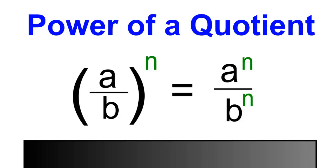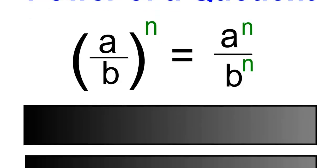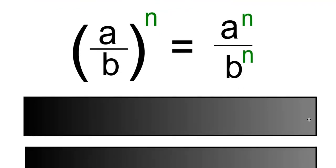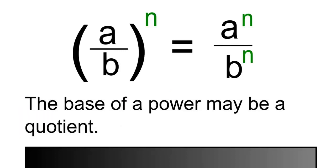Power of a quotient. A over B to the power of N is equal to A to the N divided by B to the N. The base of a power may be a quotient. In this example, the base is going to be A over B as it's all in brackets to the exponent N.